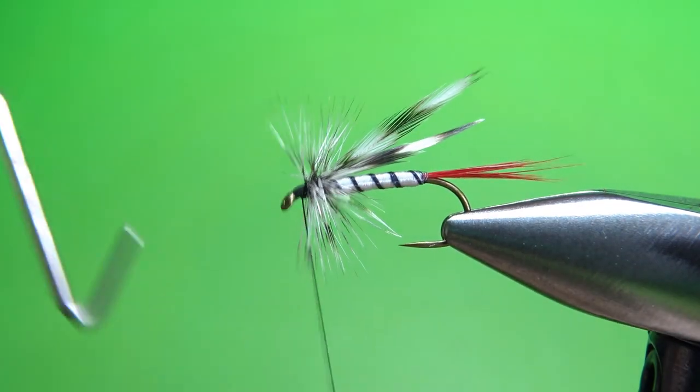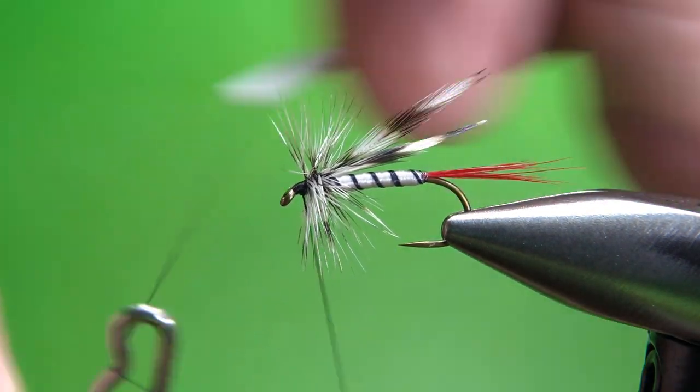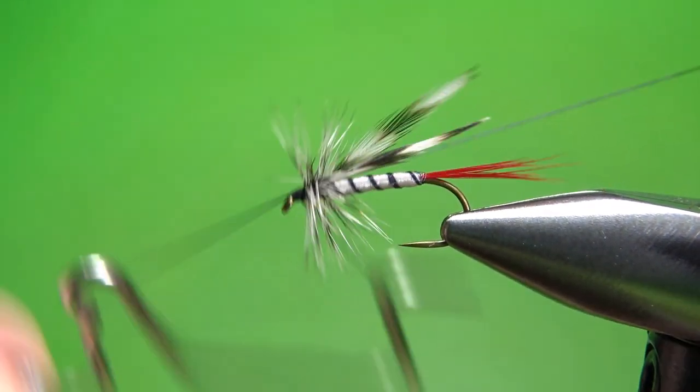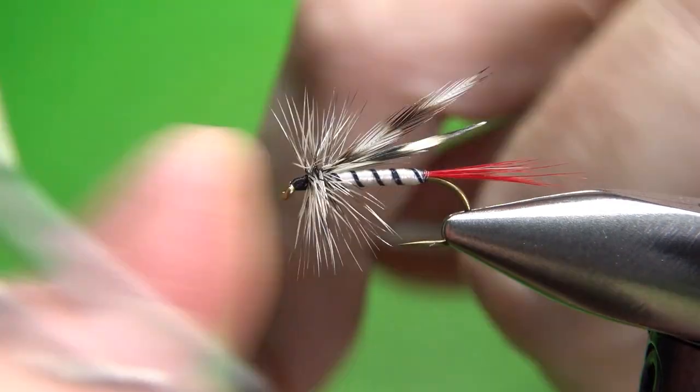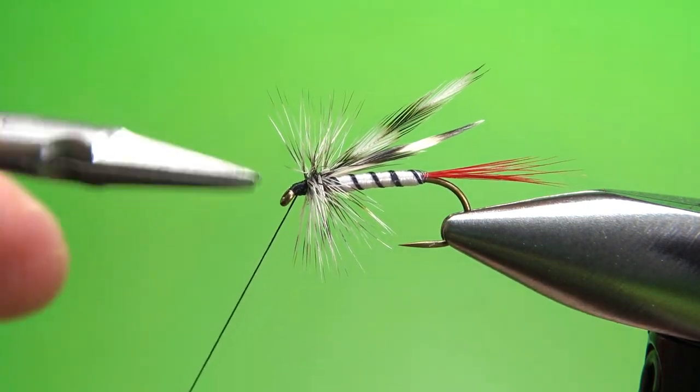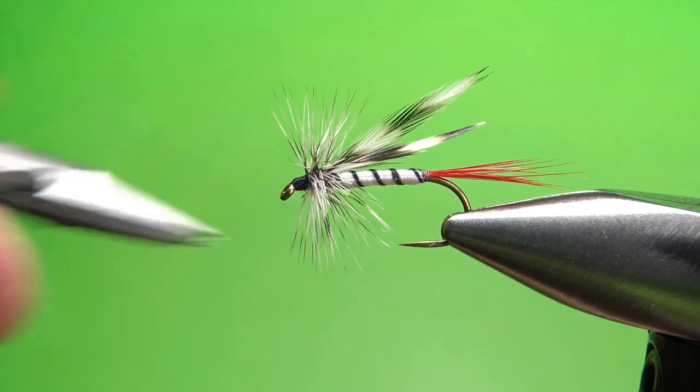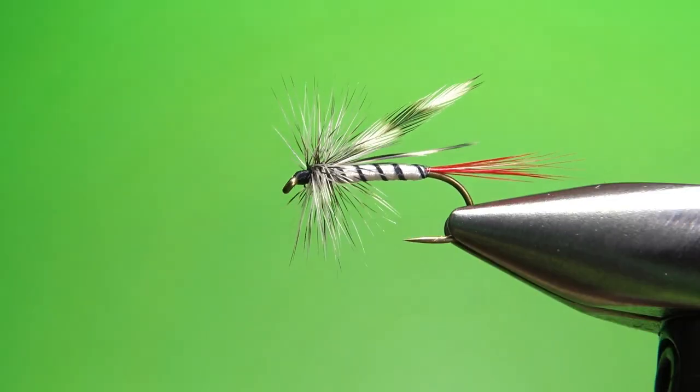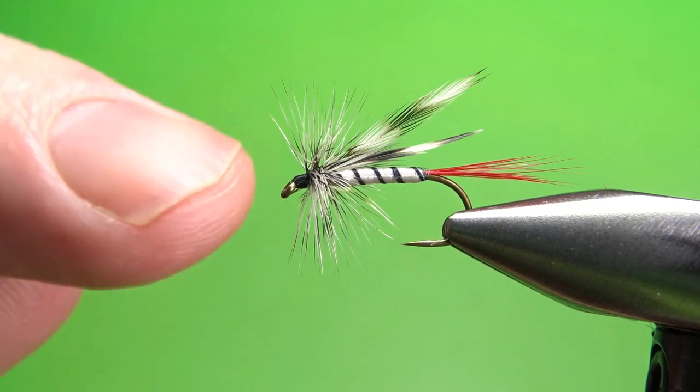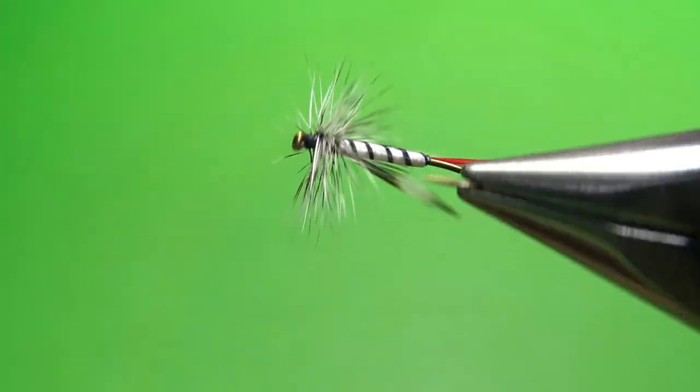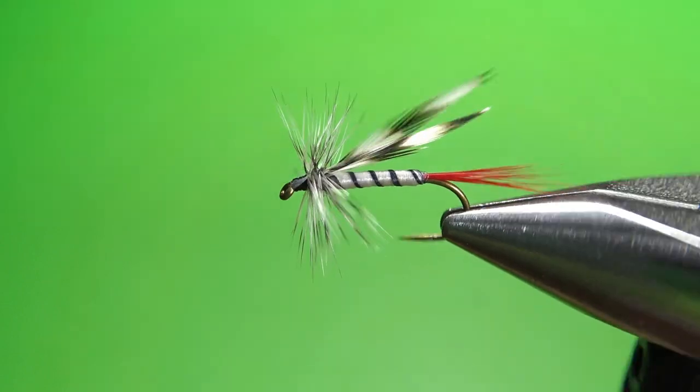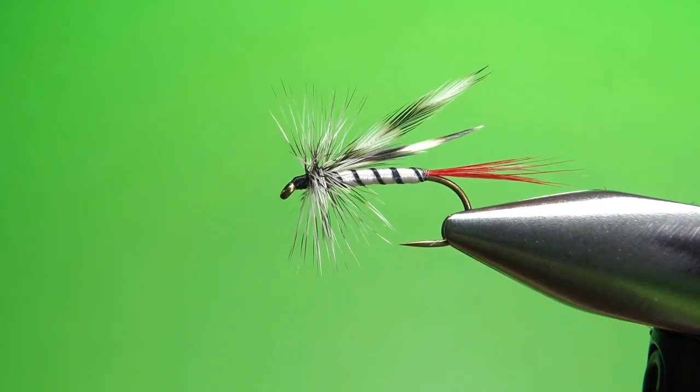Let's put the whip finish tool in and we'll see if we have any cleanup we might need to do. Just poke my scissors in here and there we go. Got room for the smallest drop of head cement on here, but that's it. Pretty simple pattern. Really pretty fun to tie and kind of cool looking. The Red-tailed Mosquito.